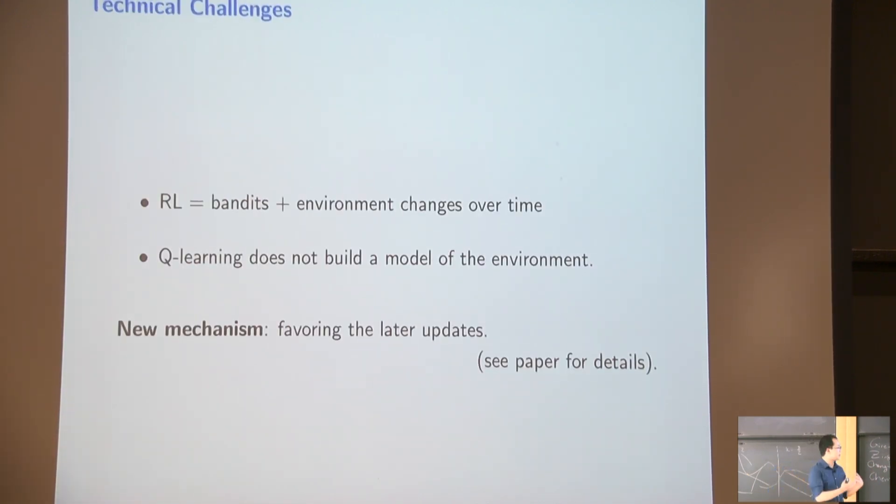So this is the main story, but I also want to talk a little bit about technical challenges. Although I phrased this problem as I just combined this classical algorithm in a bandit literature, it's actually you need to do a lot of adaptation to make this idea of confidence bound work in this time sequential scenario. And if you just naively adapt those kind of confidence bound, it will still give you something exponential in terms of H. And the other thing I want to mention is this Q-learning is actually a model-free algorithm. So it does not explicitly build a model of the environment. It just builds a model of values. And in order to overcome those technical challenges, we need to introduce a new mechanism, which we call favoring later updates. It's getting very technical. If you're interested, please see the paper, or feel free to talk to me offline.